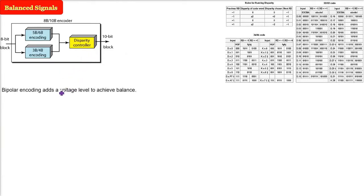Bipolar encoding adds a voltage level to achieve balance. We don't want more ones or more zeros, so we can use a mapping like 4b/5b to achieve this balance. This also helps with transitions for clock recovery.